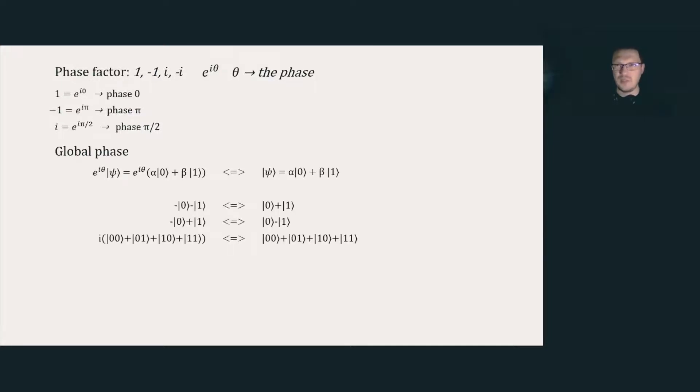There can be a global phase that multiplies the entire state. This means it multiplies all the terms of a possible superposition. This kind of phase is undetectable by any kind of operation or measurement, so we usually ignore it.